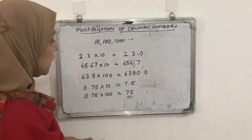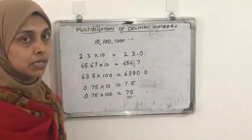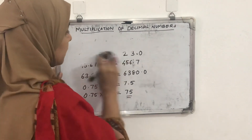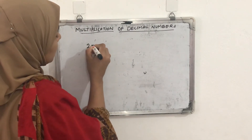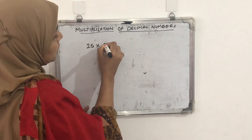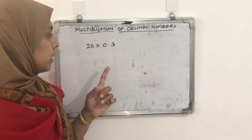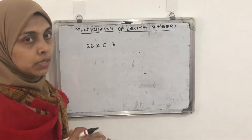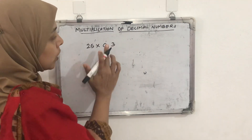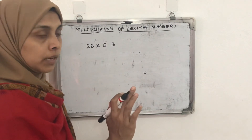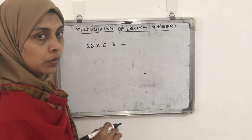Next, if we multiply a decimal number with any whole number, what will happen? Example: 25 × 0.3. First we multiply the two numbers by ignoring the decimal point. Without the decimal point, 0.3 becomes 3. So we calculate 25 × 3 = 75. Then we count how many decimal places are in the original numbers.